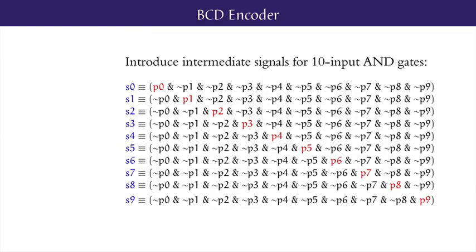In the BCD encoder system, the output depends crucially on certain combinations of input values, namely those that describe when exactly 1 out of 10 of the decimal digit inputs PI are active. So let's introduce intermediate signals S0, S1, S2, S3 up to S9, which will be the outputs of 10-input AND gates. Signal S0 is given by the conjunction of p0 with not p1, not p2, and continuing up to not p9, so that S0 is 1 exactly when p0 is the one and only decimal input active. Likewise, S1 is 1 exactly when p1 is the one and only of the 10 inputs active, S2 is 1 exactly when p2 is the one and only of the 10 inputs active, and so on up to S9.